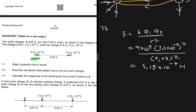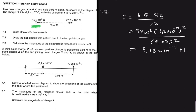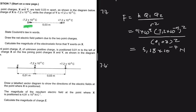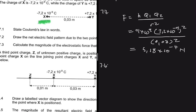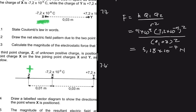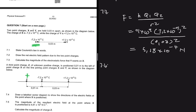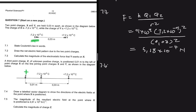Let's move to the next question — 7.4. We need to do a labeled vector diagram to show the directions of the electric fields at the point where x is positioned. In the question statement, we're told that a third point charge z of unknown positive charge is placed 0.01 meters to the left of point charge x, on the line joining point charges x and y.